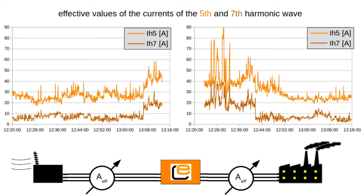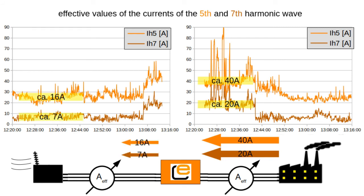We see the harmonics from the factory do not arrive at the grid. While we have an effective value of harmonics of about 20A on the factory side, we have only about 7A of harmonics on the grid side. This means that the harmonics generated here in the switching regulators do not burden the grid. And because you keep the grid free of harmonics with the eSaver, the installation is also subsidized by the Federal Ministry for Economic Affairs and Energy.